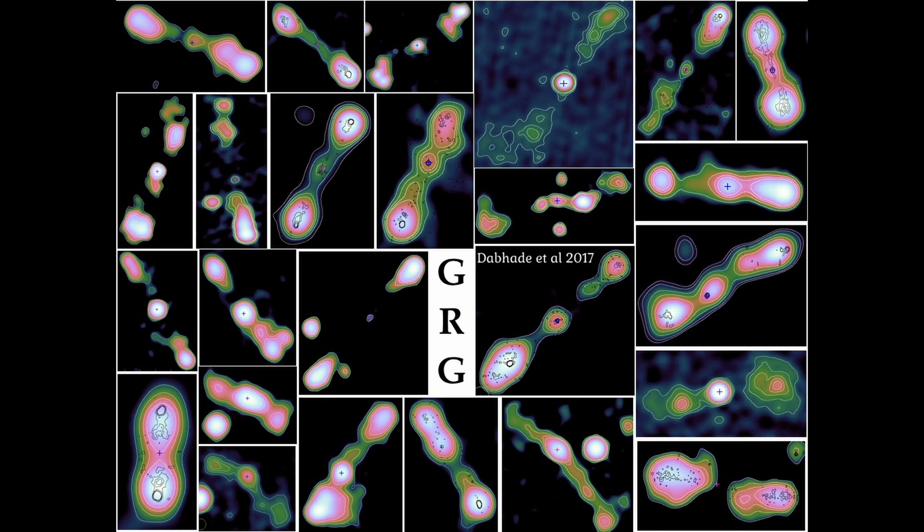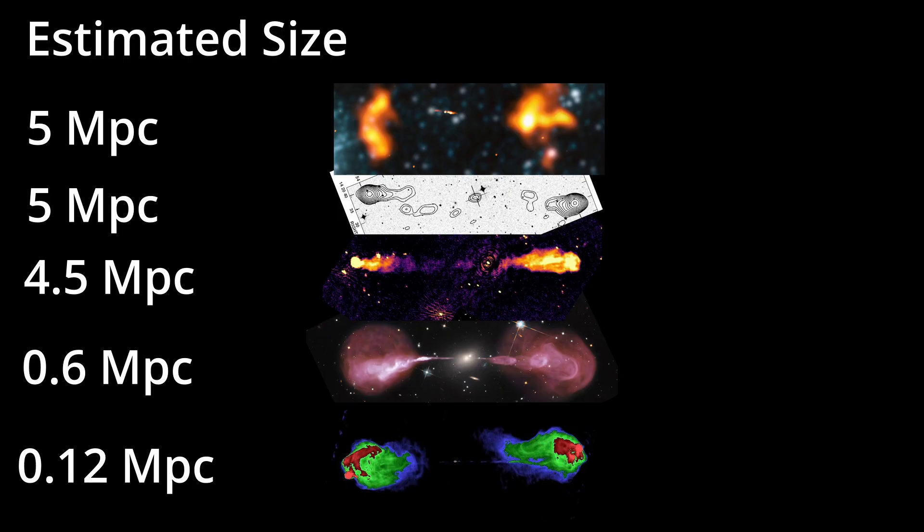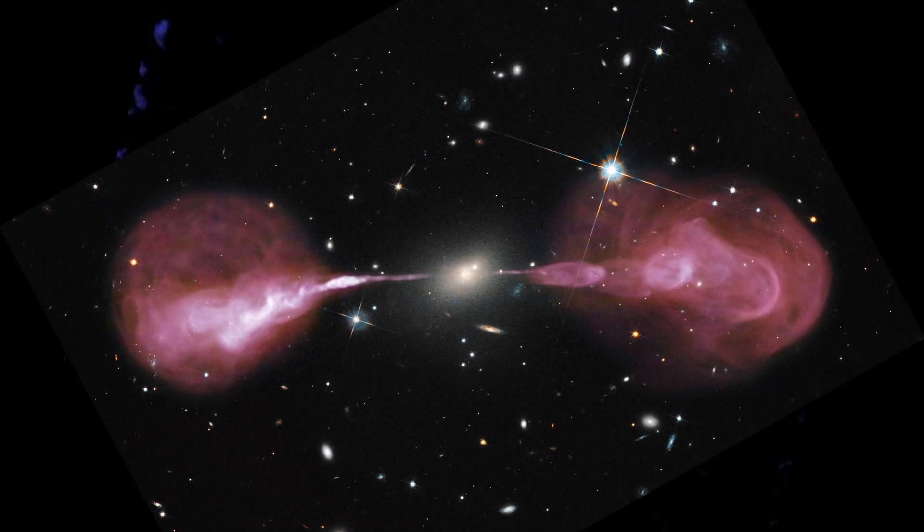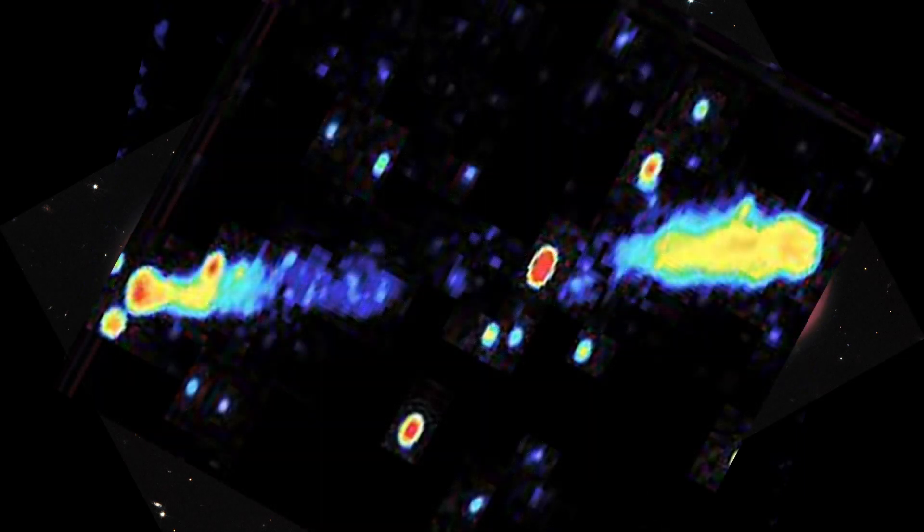Now one thought that I keep coming back to is that part of this problem is perspective. The assumption that it is large is based on the distance measurement through the redshift and our predetermined idea of what a galaxy should look like. A simple comparison of the lobe sizes scaled to the same visible size shows that the lobes are actually all very similar in terms of their shape and size once we scale them.